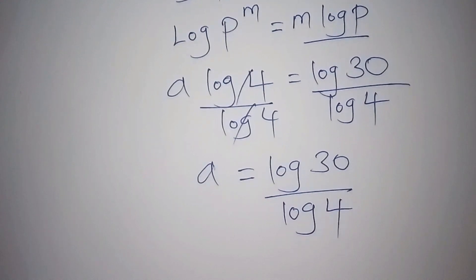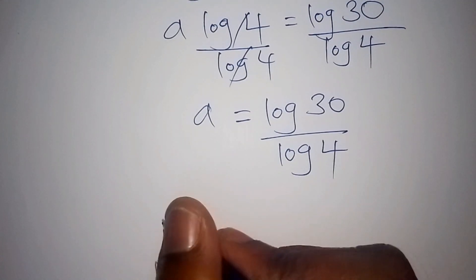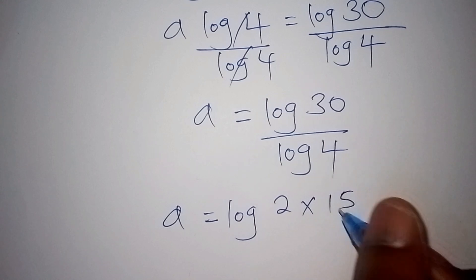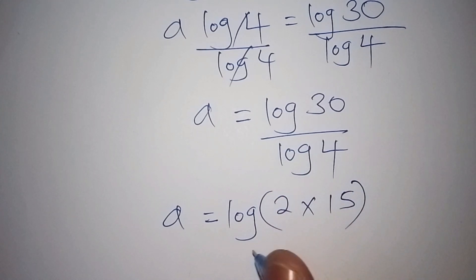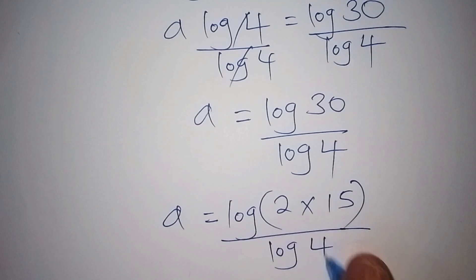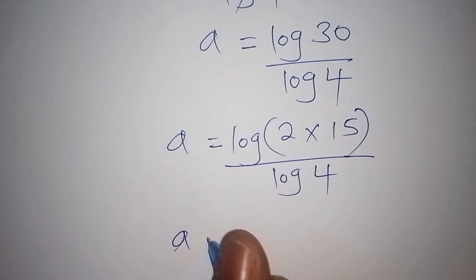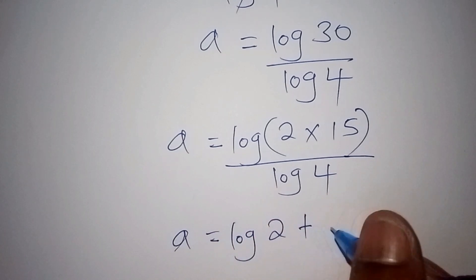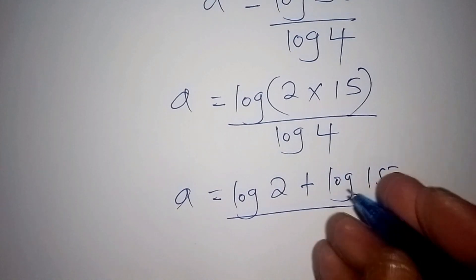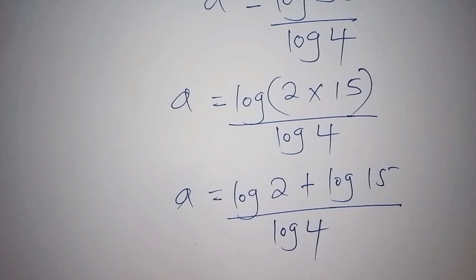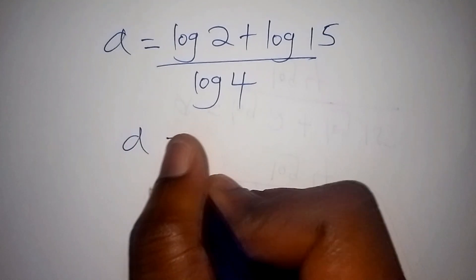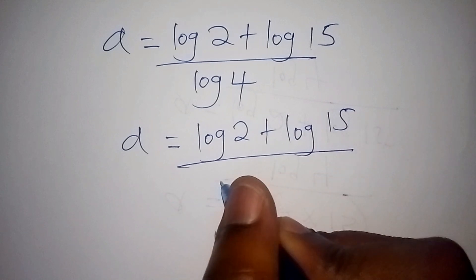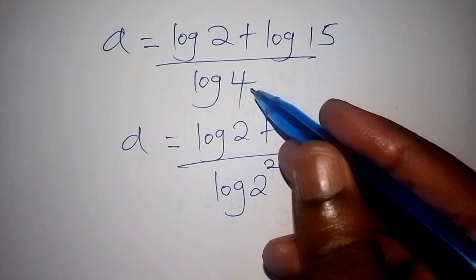That is not the final answer — we can still simplify log 30 over log 4. We rewrite log 30 as log of 2 multiplied by 15, which by the law of logarithms becomes log 2 plus log 15, all over log 4. Since 4 equals 2 to the power of 2, log 4 can be written as 2 log 2.